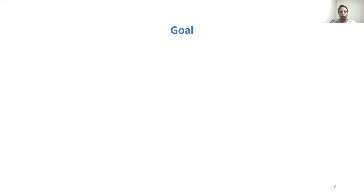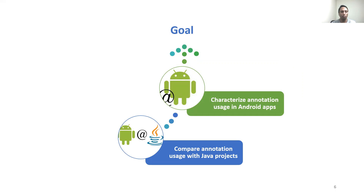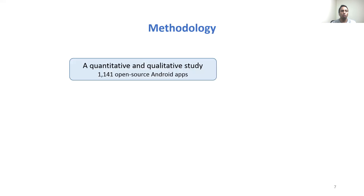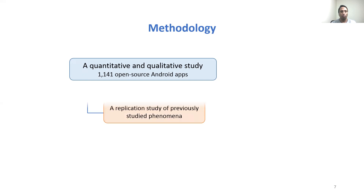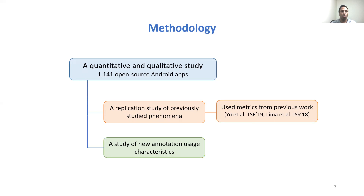We have two different goals. The first goal is to characterize annotation uses in Android apps, and the second goal is to compare them with general Java applications. To achieve these goals, we performed a quantitative and qualitative study of 1,000 open source Android apps. We performed a replication study of previously studied phenomena using metrics from prior work, and additionally a study of new annotation use characteristics such as custom annotation uses.